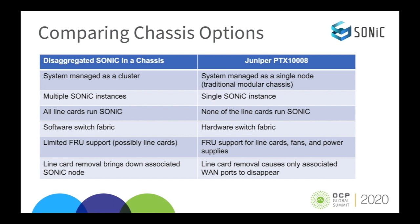Today there are two options for Sonic on a modular chassis. The first is disaggregated Sonic in a chassis. In this case, the entire system is managed as a Sonic cluster. Each line card runs a Sonic instance, so there are multiple Sonic instances. There is a software switch fabric that passes Ethernet frames between line cards. There is limited through support, typically per line card. Bringing down a line card means bringing down an entire Sonic node.